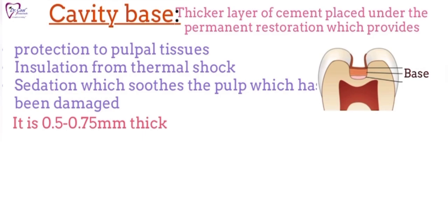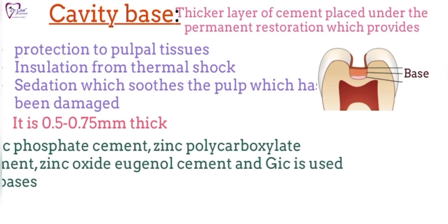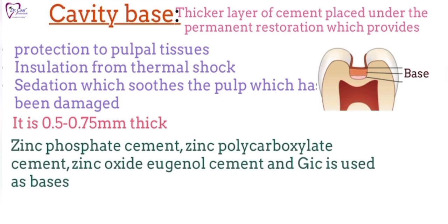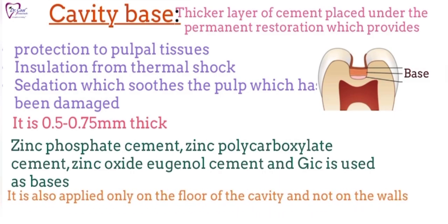The cavity base is usually 0.5 to 0.75 mm thick. Materials used include zinc phosphate cement, zinc polycarboxylate cement, reinforced zinc oxide eugenol cement, and GIC. Like cavity liners, it is also applied only on the floor of the cavity and not on the walls.